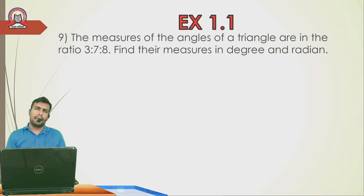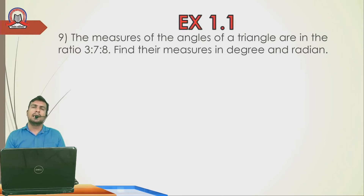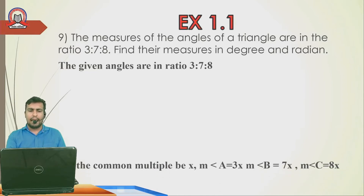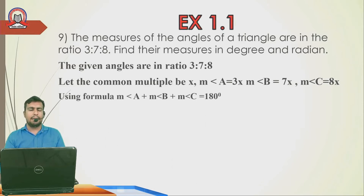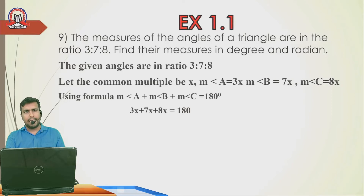Next, Exercise 1.1, Question 8: 'The measures of the angles of a triangle are in the ratio 3:7:8. Find the measures in degree and radian.' Let common multiple be x, so Angle A = 3x, Angle B = 7x, Angle C = 8x. Using Angle A + Angle B + Angle C = 180°: 3x + 7x + 8x = 18x = 180°, so x = 10°.